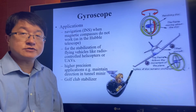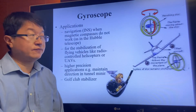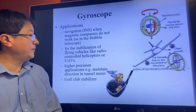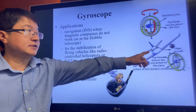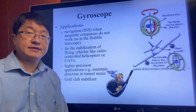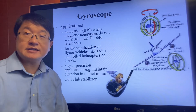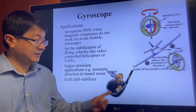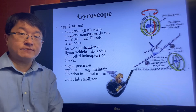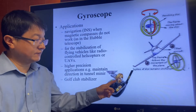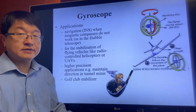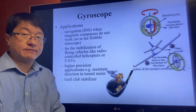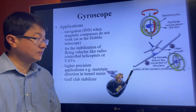There are many applications of the gyroscope. For example, vehicle stabilization in airplanes or helicopters — a flywheel running at high speed can stabilize the direction of flight. It can also be used in a golf club: with a flywheel inside the club, it helps stabilize the direction when you make a strike.